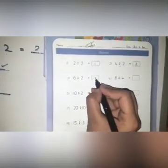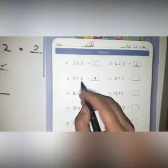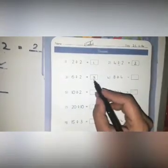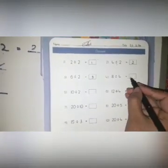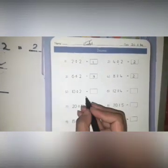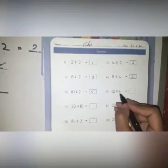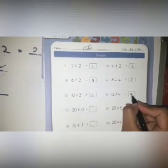6 divided by 2 equals 3. 4 times 2 is 8, so the answer is 2. 2 times 5 is 10, 4 times 3 is 12.